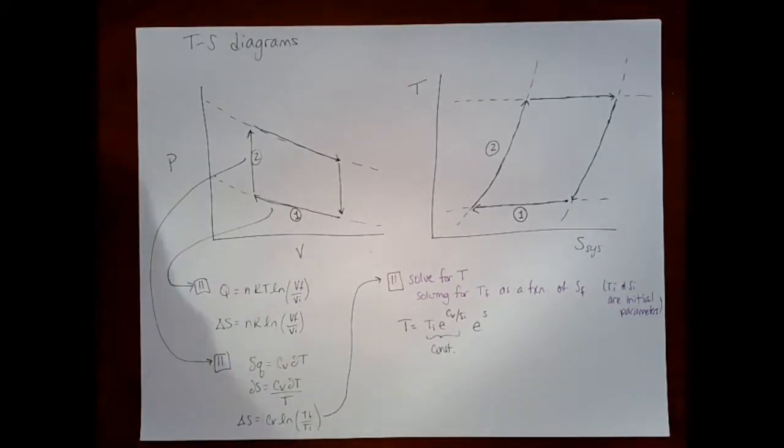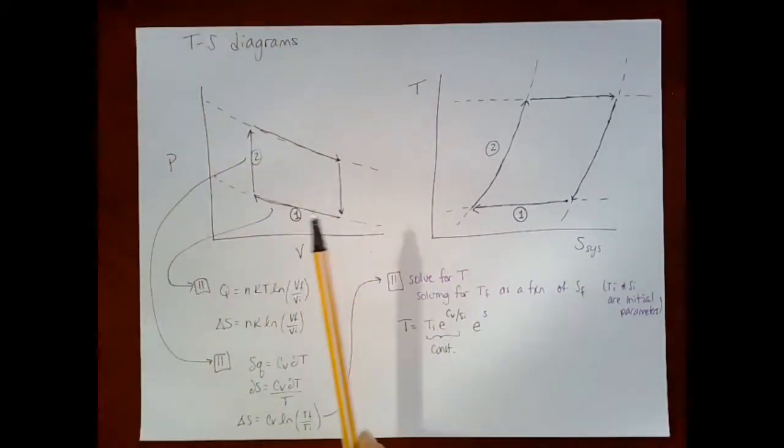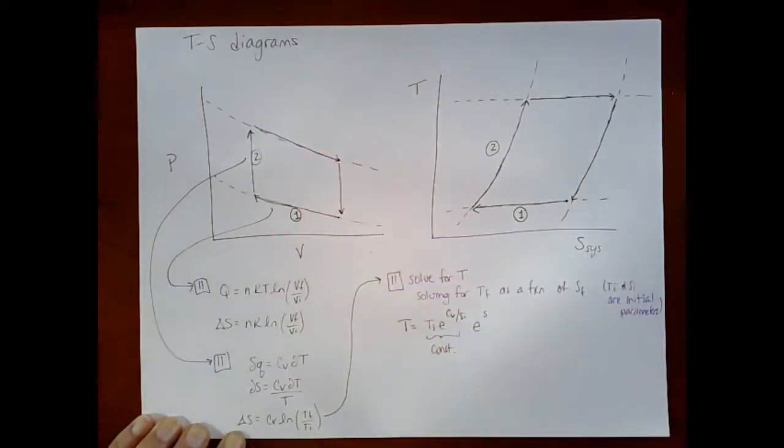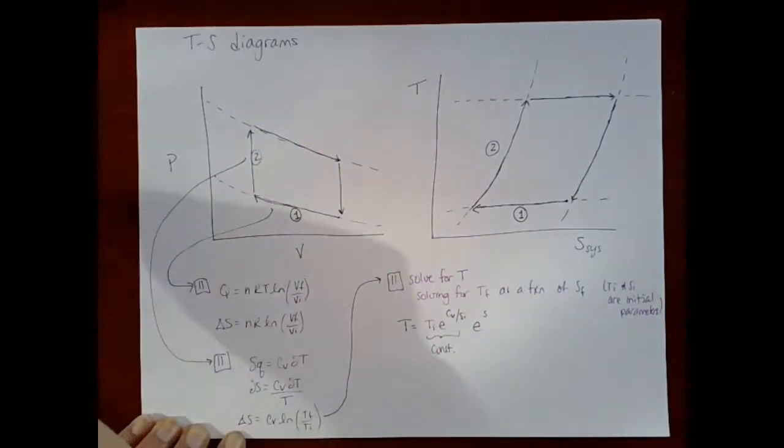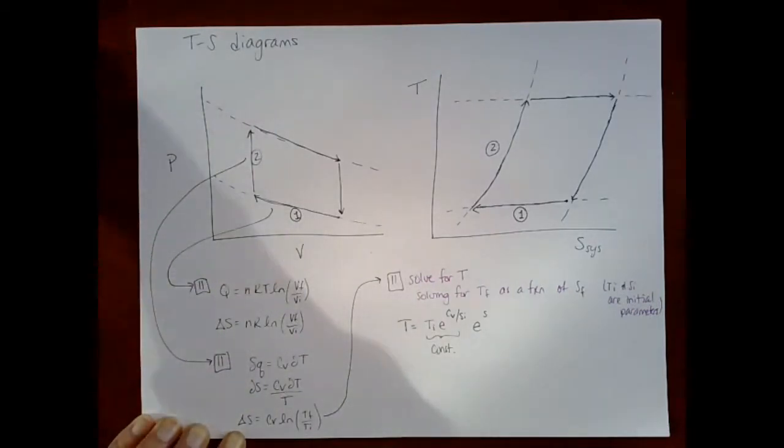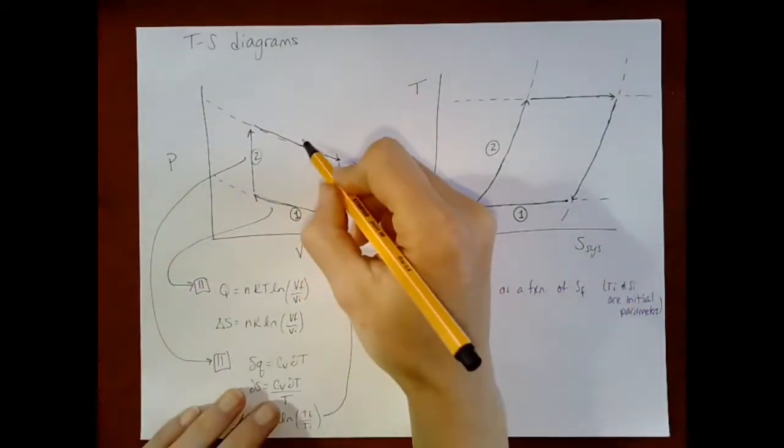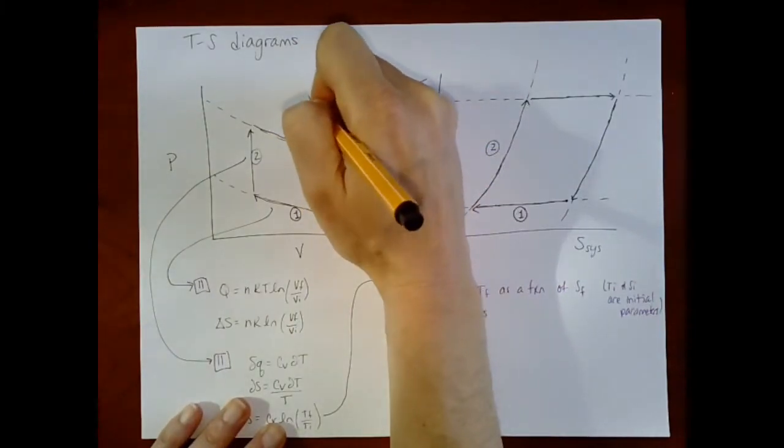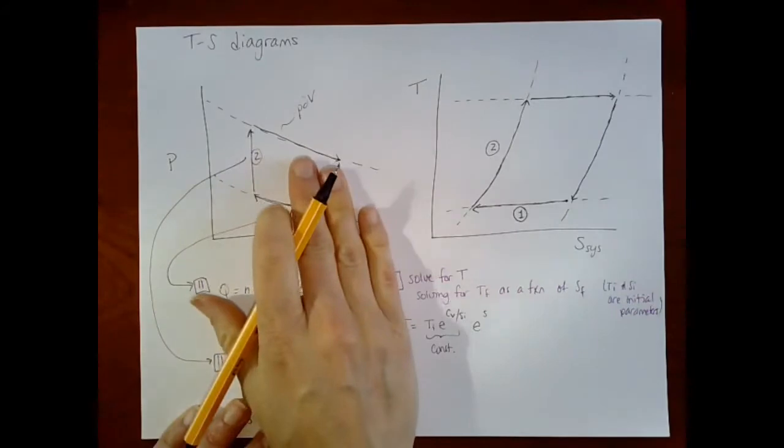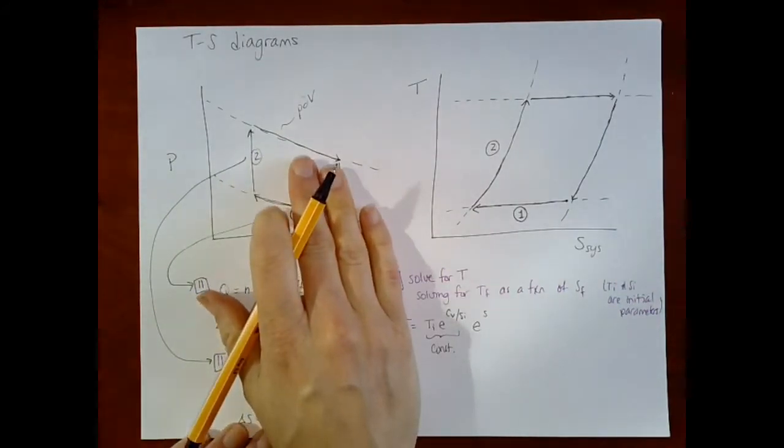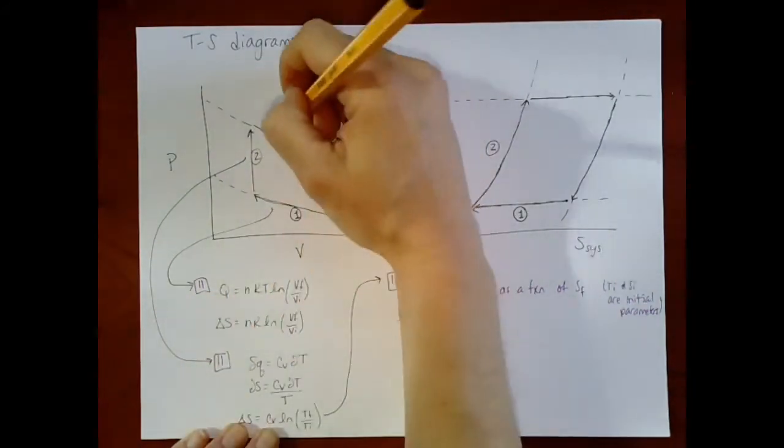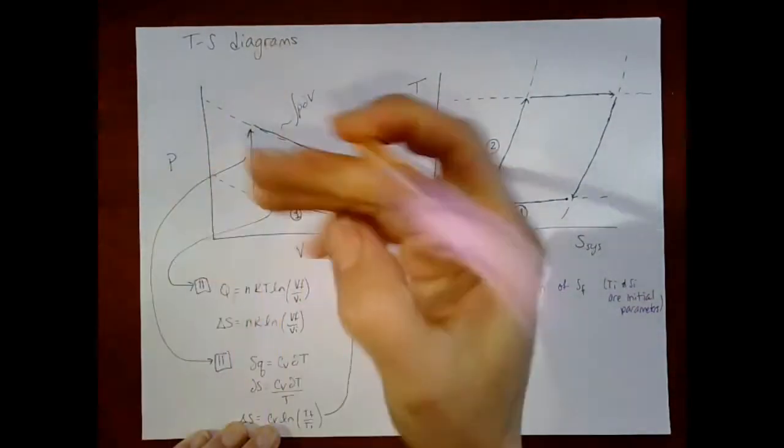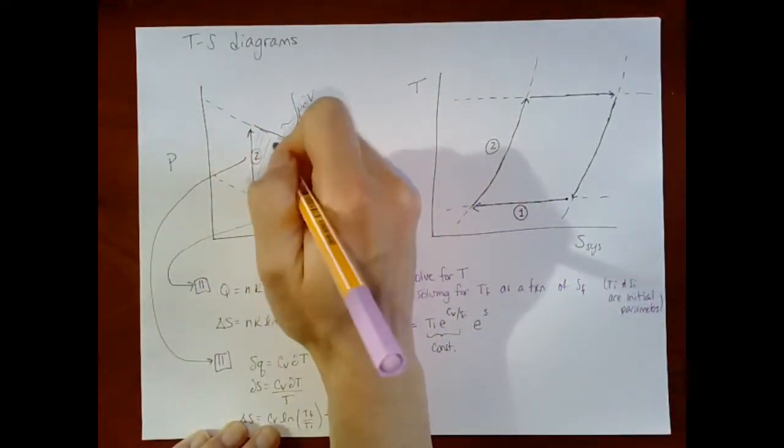Alright, now perhaps you recall that for a pressure volume diagram, we thought about the area under this curve. So the equation for this curve here, we can think of this as P dV. And if I think about the area under the curve, then that is equal to the amount of work because it's the integral of P dV. So here I'm going to color in the integral of P dV.